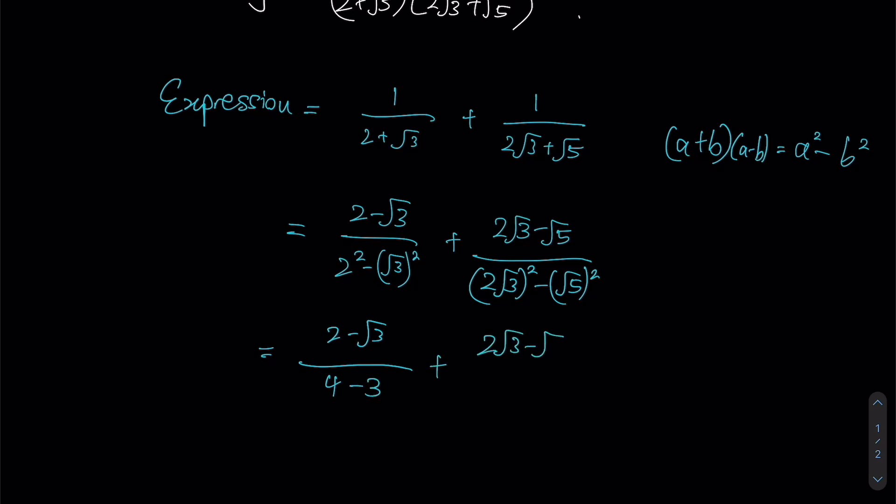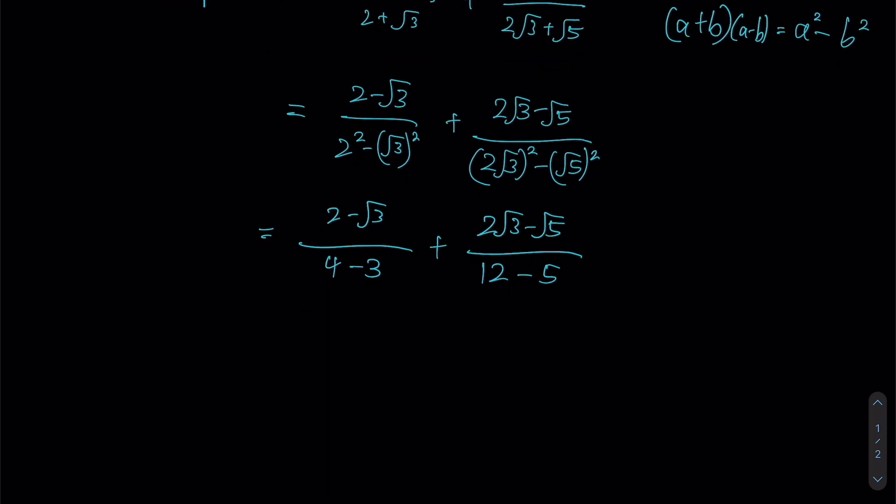And then for the fraction on my right, this again, 2 times root 3 squared. 2 squared is 4, root 3 squared is 3. 4 times 3 gives us 12. Root 5 squared is just going to be 5, right?